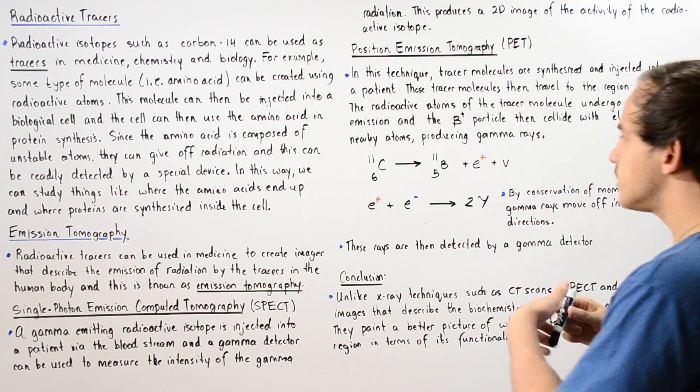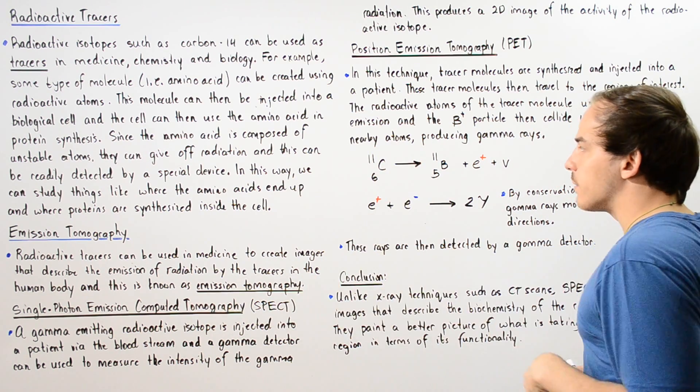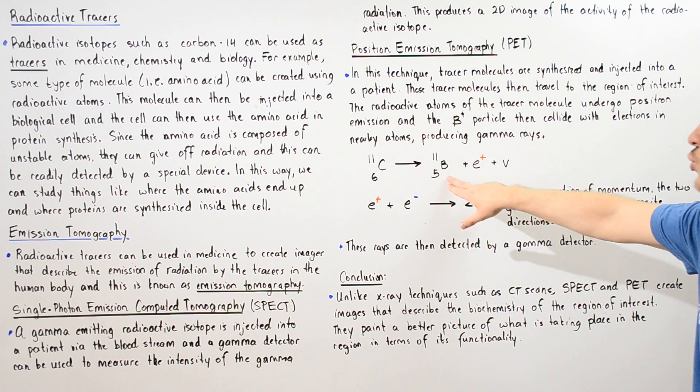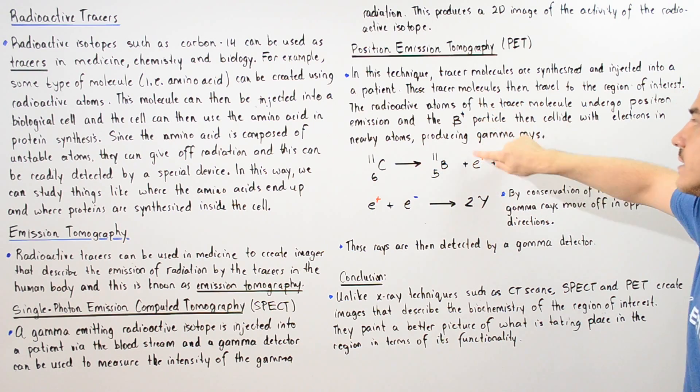Let's suppose we have a carbon that is injected into our body. That carbon undergoes a positron emission releasing an electron with a positive charge known as the beta positive particle.